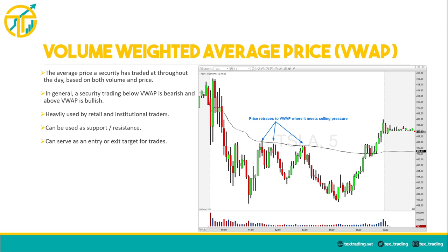The volume weighted average price, or VWAP, provides a trader with the average price a security is traded throughout the day based on both volume and price. It can be used on any intraday time frame — one-minute, five-minute, etc. Originally used by institutions, the VWAP is now widely used by retail and professional traders as part of their trading system. It can be used both as support and resistance or as entry and exit points for trades. A common strategy is to wait for a pullback to the VWAP in order to join the trend; for reversals, the VWAP offers a great target to aim for.